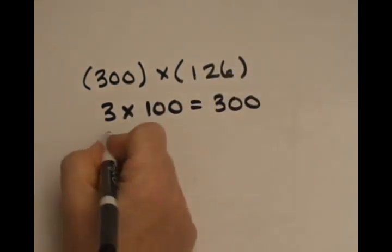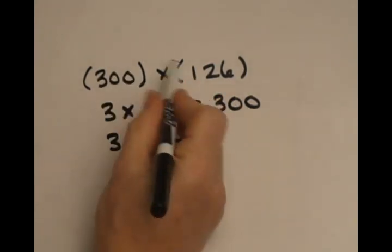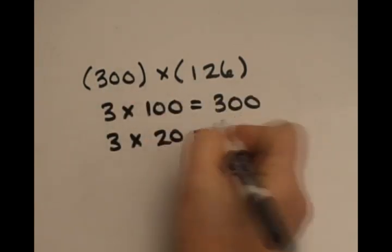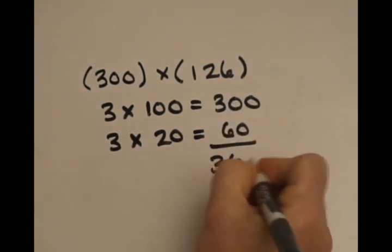Then I would multiply 3 times 20. So the 3 times the 100's, then the 3 times the 20, and then I'm going to add those together. So 3 times 20 is 60. Add these results, I get 360.